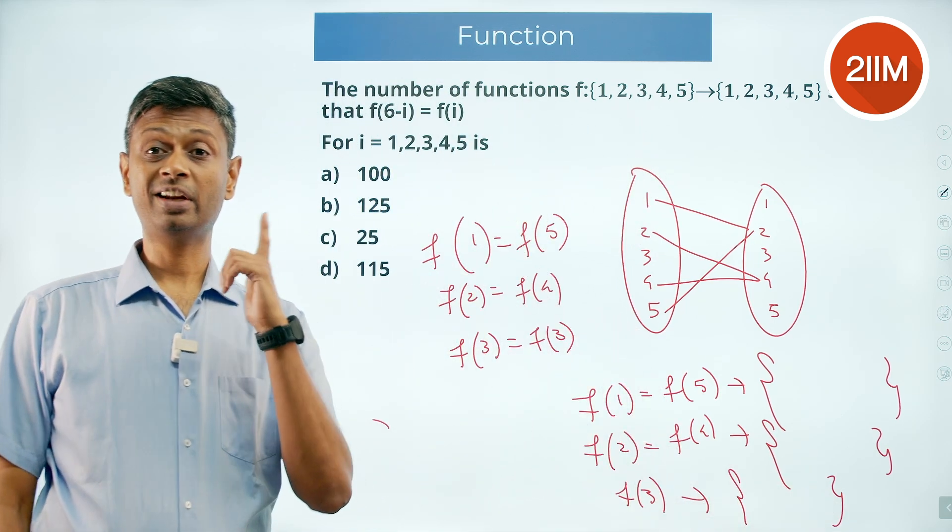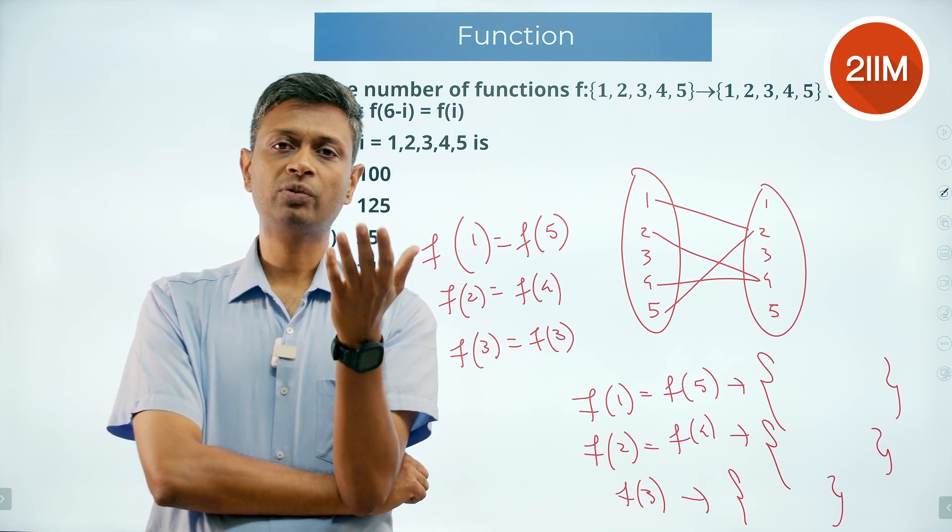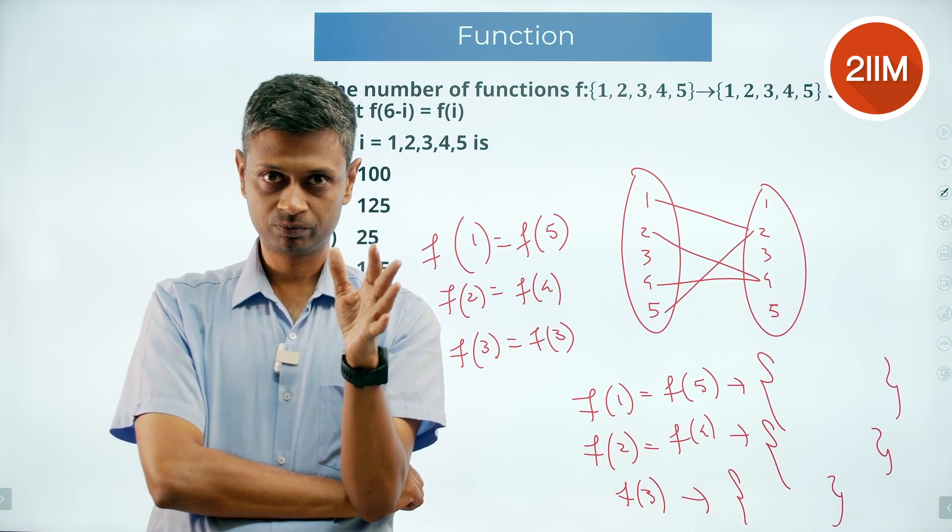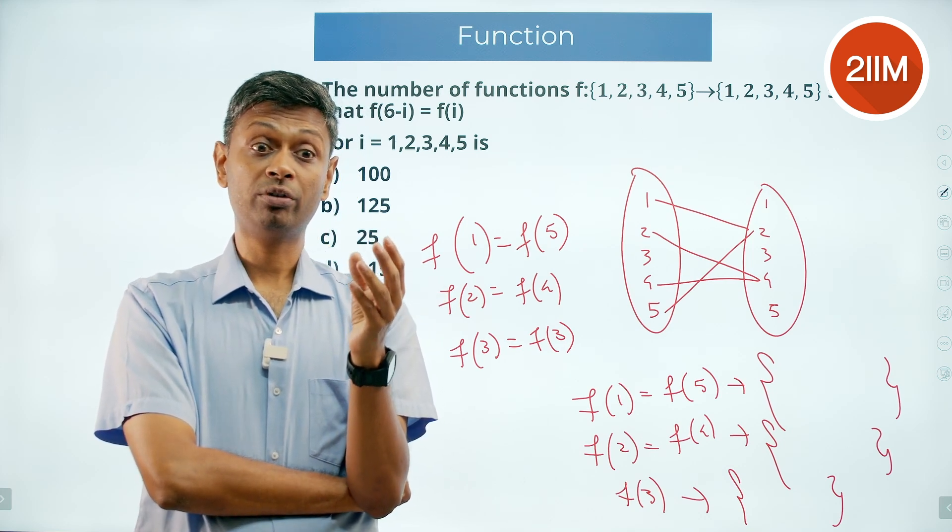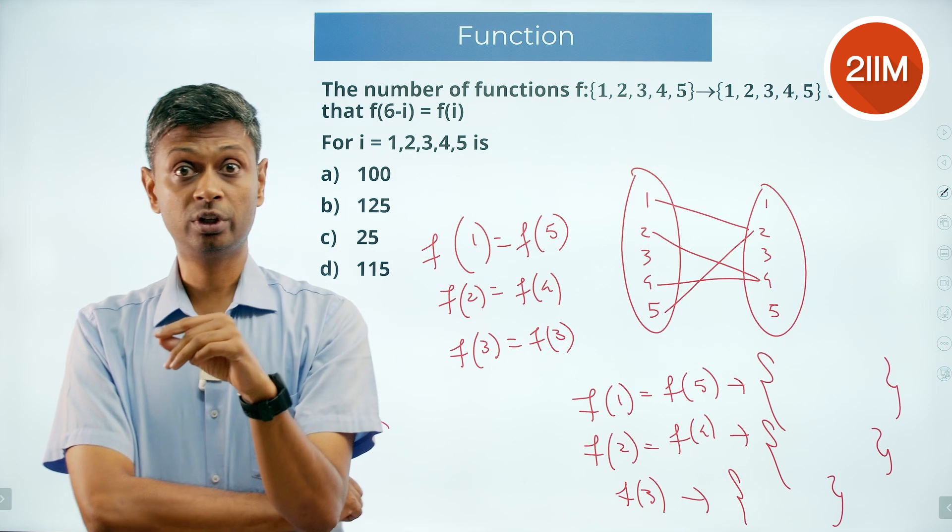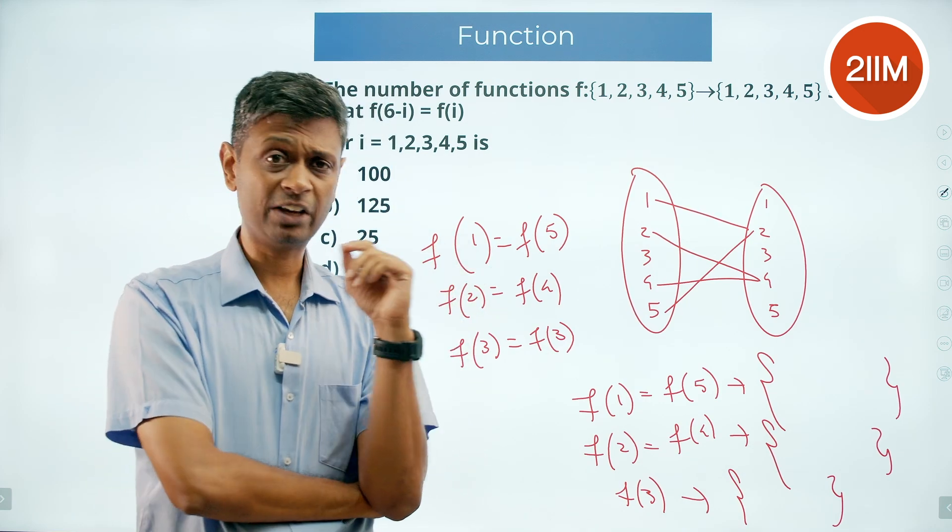So for f of 1 there are 5 choices: 1, 2, 3, 4, 5. The moment I choose f of 1, f of 5 gets automatically selected. f of 2, there are 5 choices. The moment I select f of 2, f of 4 gets already selected. I could have a scenario where f of 1 is equal to f of 2 is equal to f of 4 equal to f of 5. That's completely allowed.